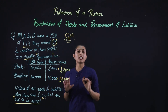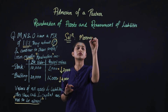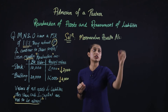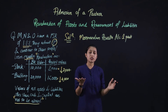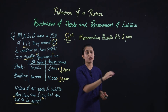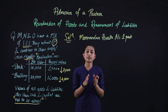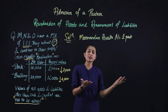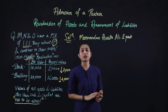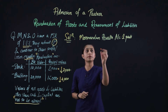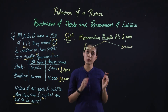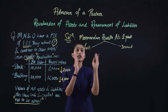As discussed, the Memorandum Revaluation Account is prepared in two parts. In this example, we will first pass the journal entries. In the first part, similar to the Revaluation Account, we record all revaluations. The entries are divided into two parts, but they should be in continuation — you need to maintain the distinction between the two parts.